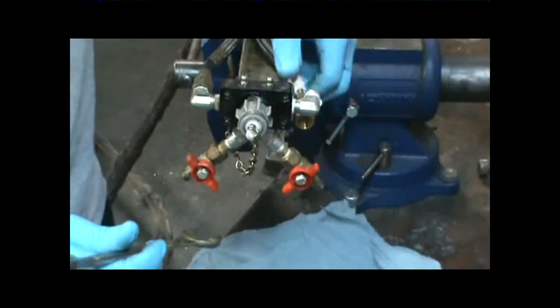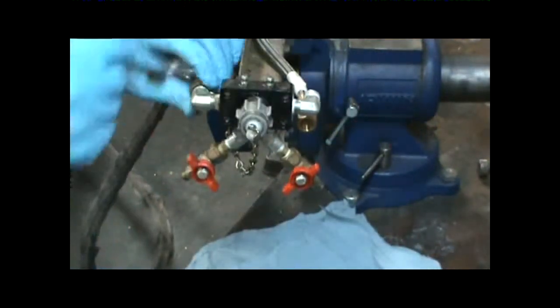Our next step is to clean the manifold. Do this by removing the hoses right here with the 11/16ths wrench.